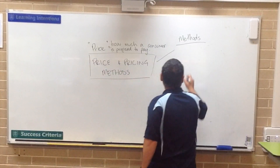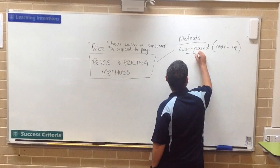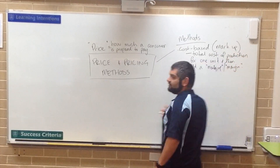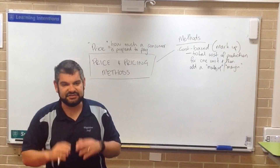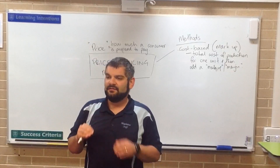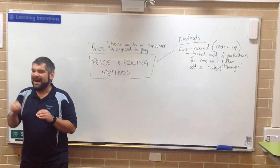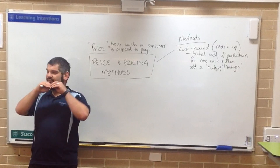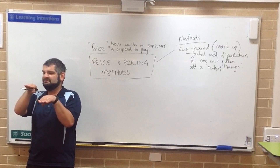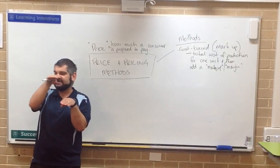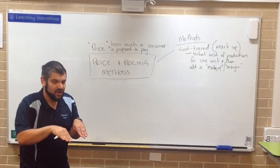With cost-based pricing, they figure out how much it costs to make a product — for example, $3 to make one tennis racket — then they add a markup or a margin. They add an extra 10%, or an extra 100%, or an extra 1,000% on top of that.